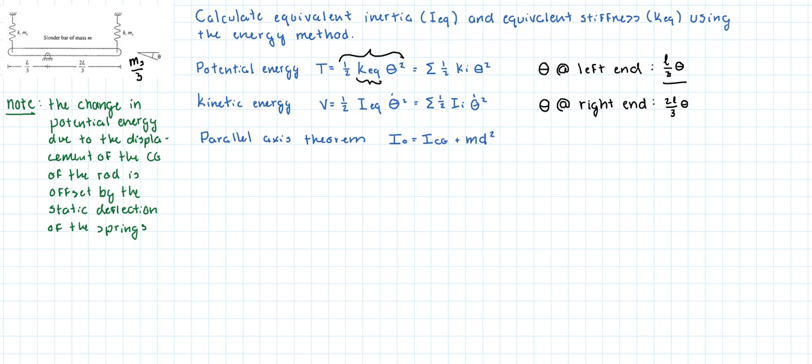The kinetic energy is equal to one half times the equivalent inertia times the velocity squared. The way we're going to do this is that we're going to sum up all of the inertia terms, and we're going to say that what is in between one half and the velocity squared is the equivalent inertia.